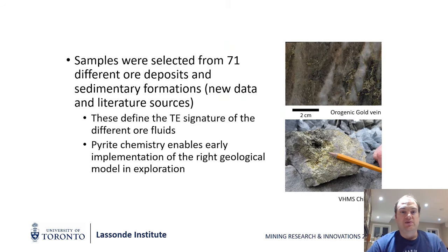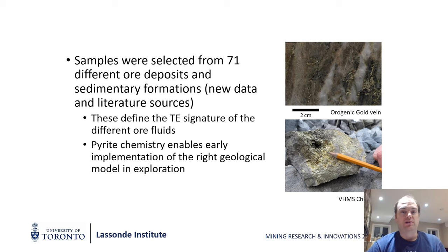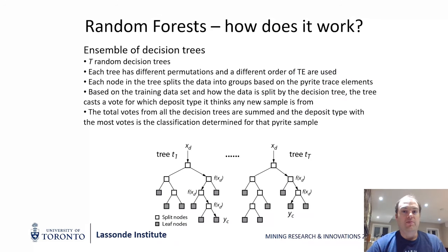We selected samples from 71 different ore deposits and sedimentary formations. Sedimentary formations were taken so we would have a non-mineralized pseudo-background pyrite to compare against, drawn from both new data and literature sources. We used these to statistically define the trace element signatures from the different ore deposits. Because pyrite trace element chemistry is pretty complicated, we decided to employ machine learning — specifically random forest — which uses an ensemble of decision trees and a training data set to predict what deposit a given unknown pyrite is from.